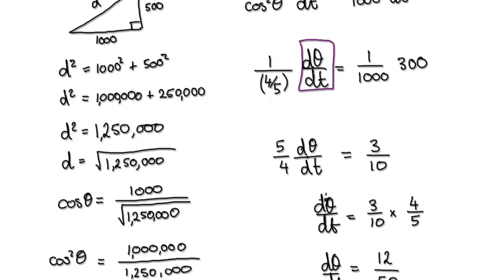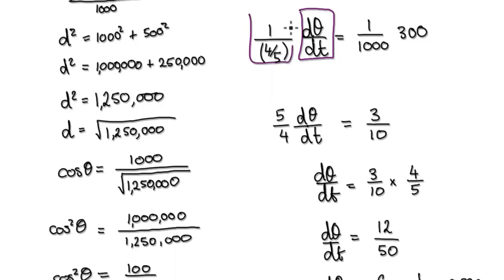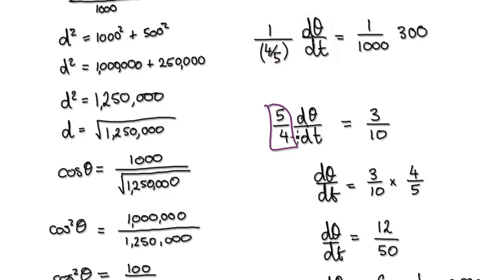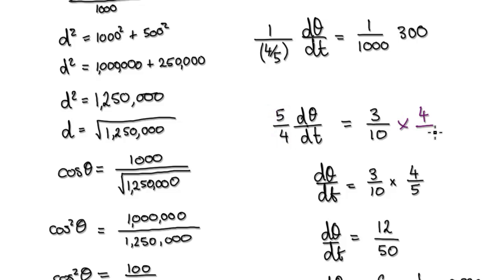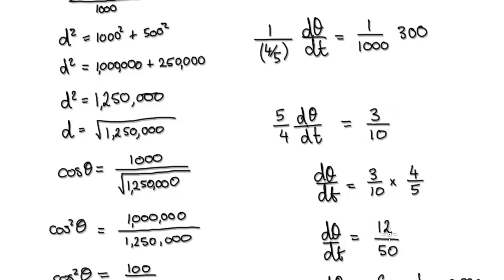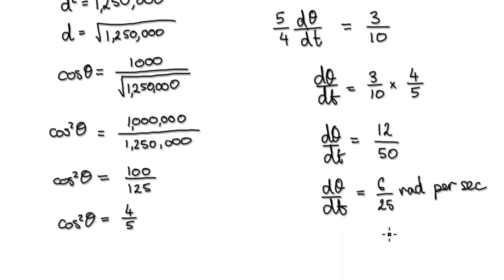Tidy this up. Dividing both sides, when you divide by 5 over 4 you multiply by the reciprocal 4 over 5. This gives you 12 over 50, which tidies up to give you 6 over 25 radians per second. This is your final answer.